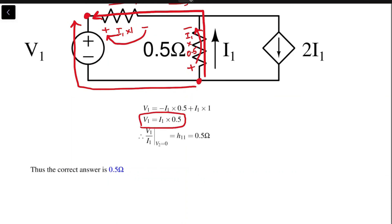So v1 by i1 when v2 equals 0, which is h11, is 0.5 ohms. Thus, the correct answer is 0.5 ohms.